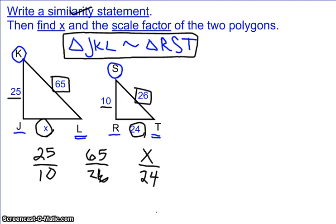Alright, so I have my three ratios set up. And right now they all look pretty different. 25 over 10, 65 over 26, and x over 24. But the truth is, since we're told that these triangles are similar, these fractions should actually all be equivalent and represent the same amount.